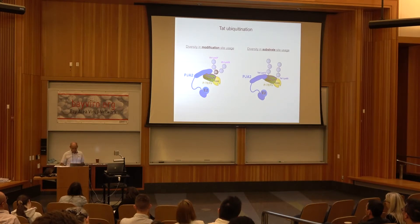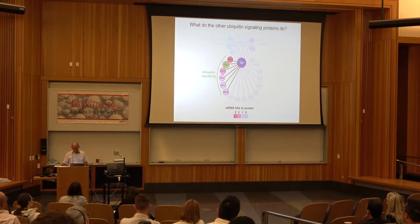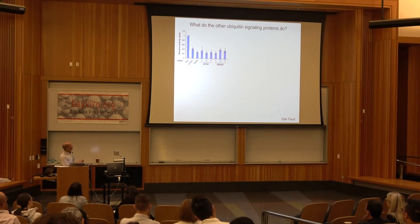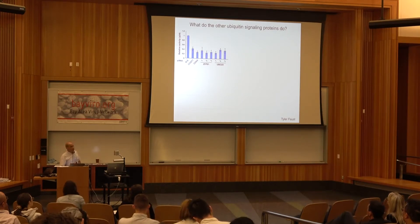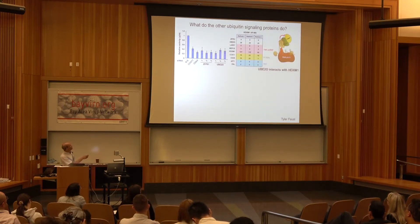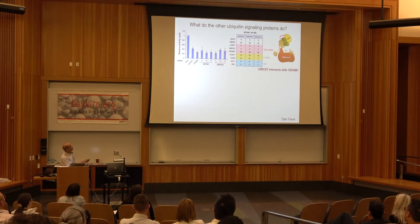There were other ubiquitin signaling proteins of interest. siRNA experiments found a couple of other E3 ligases that gave strong knockdown of TAT activity, comparable to knocking down P-TEFb components. Proteomic studies with HEXIM1 — a component of the 7SK-SNRP — revealed that UBE2O came up very strongly as an interacting partner. HEXIM1 is part of this complex, and we could confirm that UBE2O interacts very strongly with HEXIM1, unlike the other ligase ZFP91, which showed no interaction in mass spec.